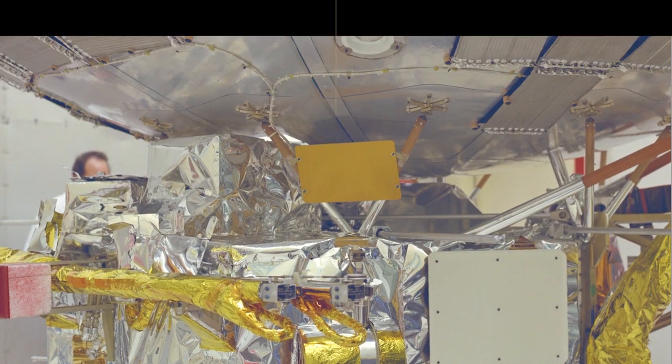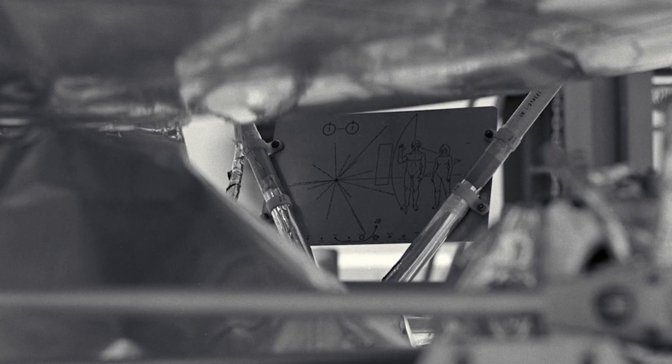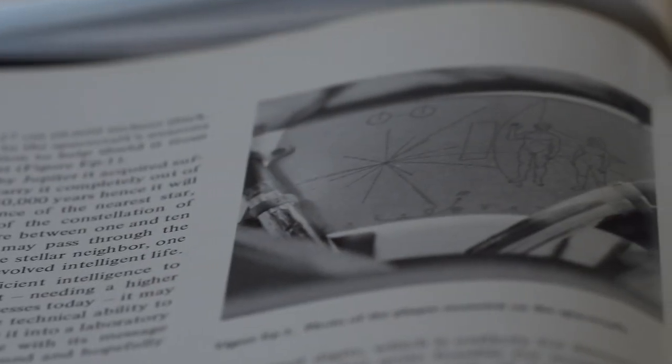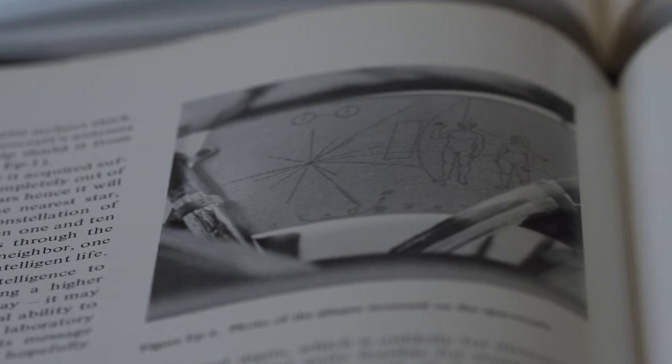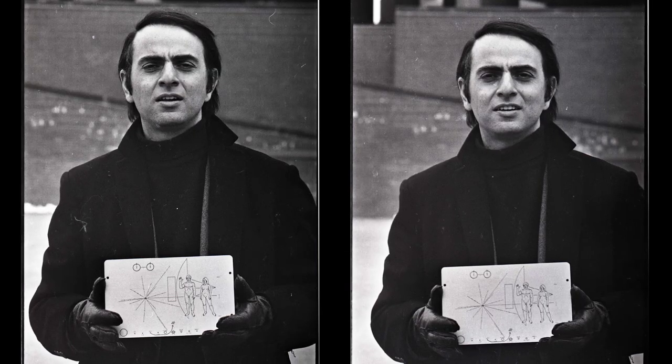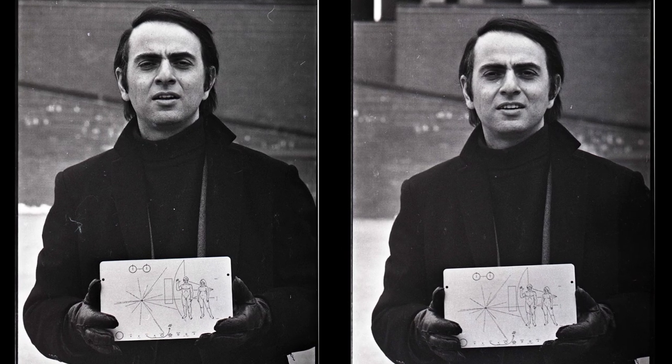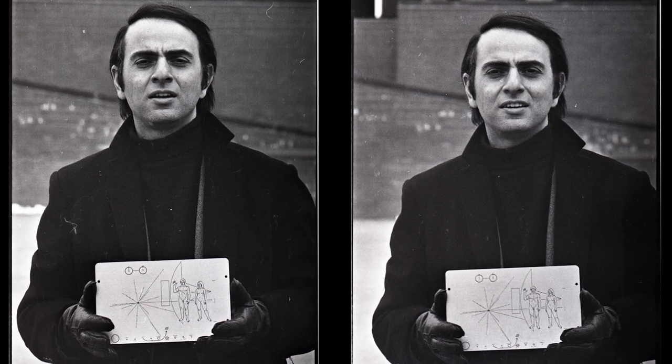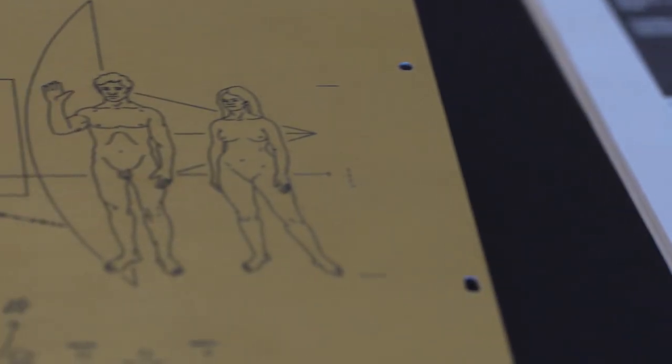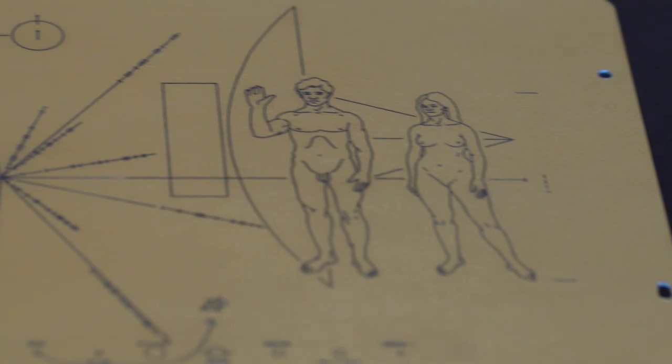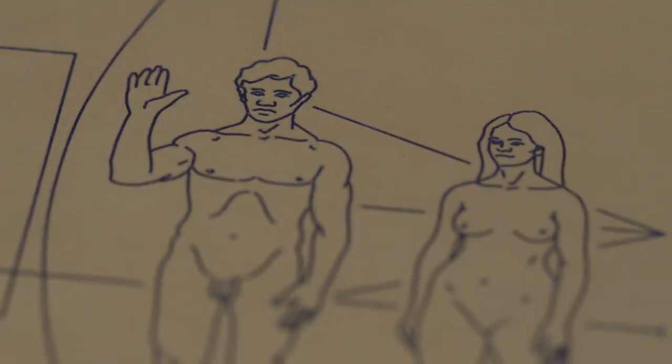Engraved upon a gold anodized aluminum plaque, bolted to its antenna support, was quite possibly the most ambitious piece of visual communication ever conceived. The plaque was designed by Frank Drake and Carl Sagan with artwork by Linda Salzman Sagan to serve as a galactic greeting card, communicating when and where Pioneer was launched and by what kind of beings to alien lifeforms who might someday encounter it.